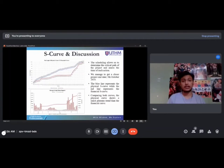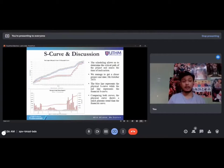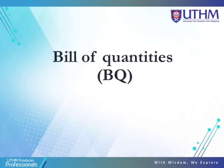The S-curve and discussion: the scheduling allows us to determine the critical path of the project. We managed to get a project end date of 5 October 2018. The blue line represents the physical S-curve while the red line represents the financial S-curve. Comparing both curves, the physical curve shows a much better gradient than the financial curve.